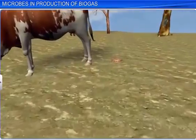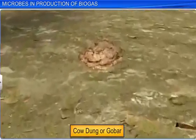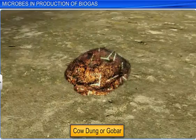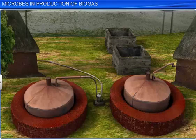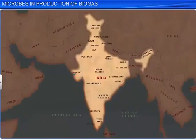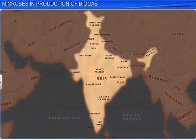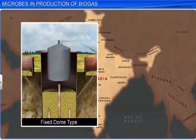This explains why cattle dung, also locally called gober, is rich in methanobacterium. This dung or gober is used to generate biogas, also known as gober gas, in a biogas plant. In India, two types of biogas plants are used: the fixed dome type, and the floating gas holder type.